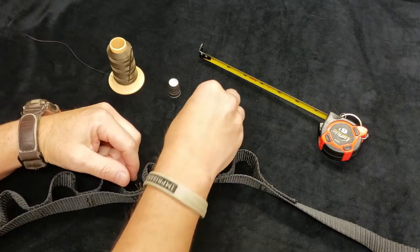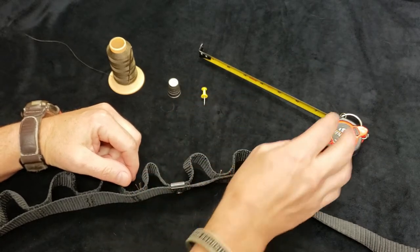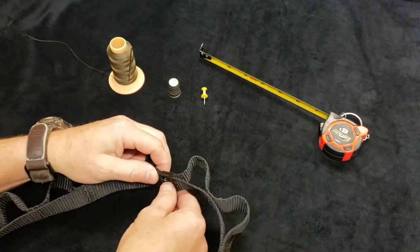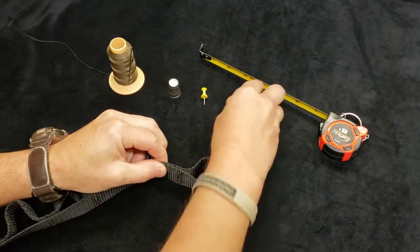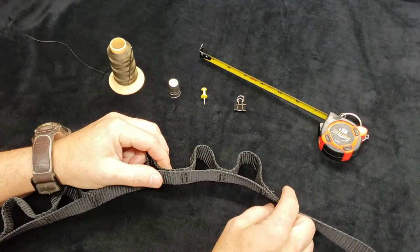You'll need a thimble. You'll need a push pin. You'll need a ruler. And you'll need one of these binder clips. So that's all you need.